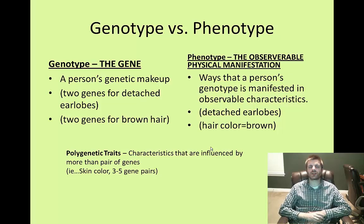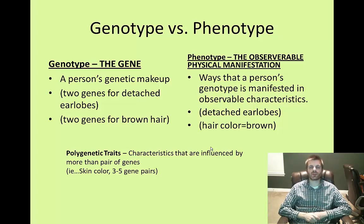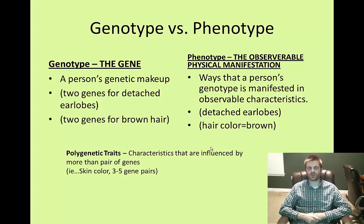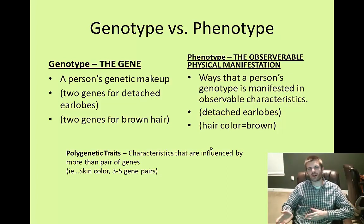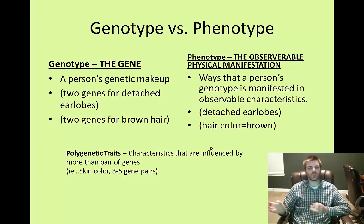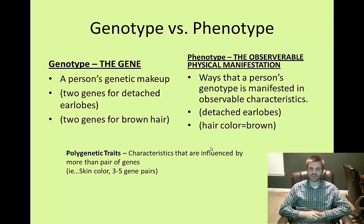Another confusing pair in AP psychology is genotype versus phenotype. When you see G for genotype, think about just the gene itself or genetic makeup. When you see phenotype, think about physical manifestation. So your genotype is your genetic makeup — for example, you may have two genes for detached earlobes, two genes for brown hair, or for blue eyes. The phenotype is how we actually observe it: do you have brown hair, blonde hair, detached earlobes, or attached earlobes? For many traits this can actually be predicted well in advance of your life beginning.